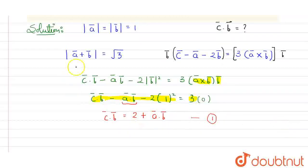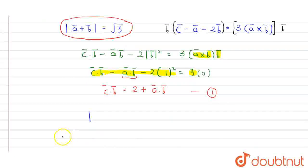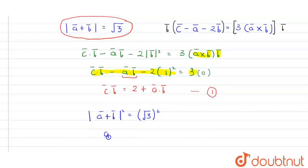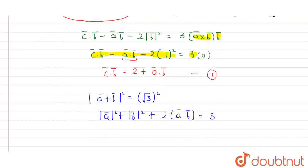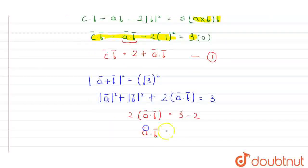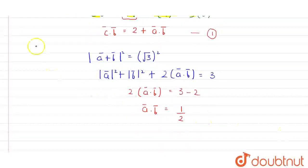Now for finding the value of A dot B, we use the given condition. If I square both sides of the equation A plus B equals root 3, I get: A squared plus B squared plus 2 times A dot B equals 3. The magnitudes of A and B are both 1, so 1 plus 1 plus 2 times A dot B equals 3. Therefore 2 times A dot B equals 1, giving A dot B equals 1 upon 2.